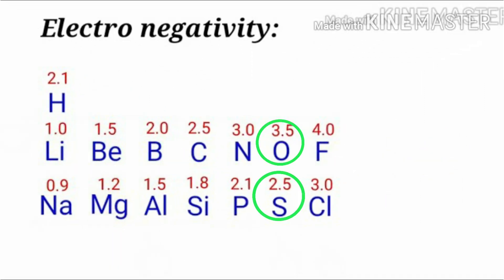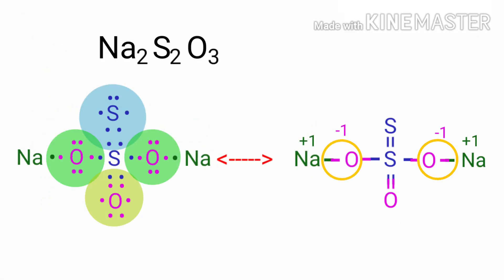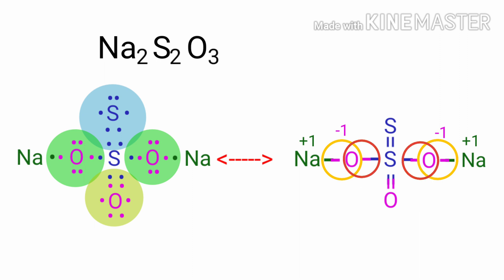As per the electronegativity chart, oxygen has more electronegativity than sulfur. So in the S-O single bonds, the oxygen atoms take the bonds towards itself. Therefore, the oxidation number of sulfur is plus one and the oxidation number of oxygen is minus one.